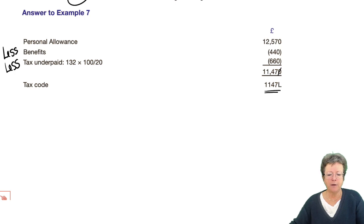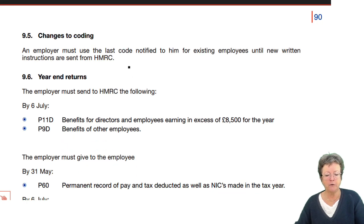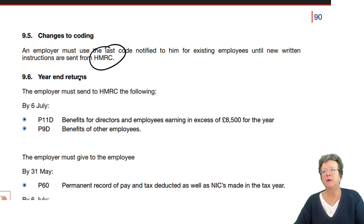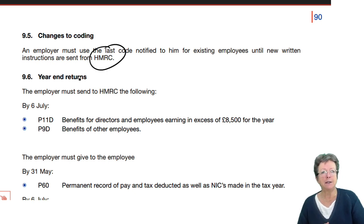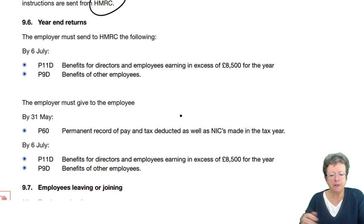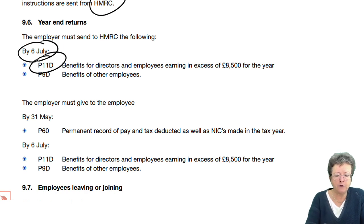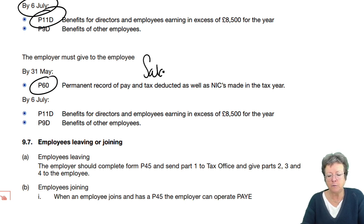What happens if there is a change of coding during the year? It's up to the employer to notify the revenue, and the revenue will alter the code if there is a new benefit, if benefits are removed — all of those things in the pro forma. If they alter at any time, it's the employer's responsibility to let the revenue know. At the end of the year, a P11D must be supplied by the 6th of April showing benefits, and by the end of May they must supply a form P60, which shows your salary and the tax and NI that you've paid in the year.